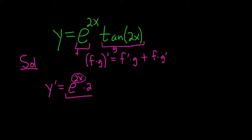So all of this is the derivative of the first, e to the 2x times the derivative of the inside, times the second plus the first times the derivative of the second. The derivative of tangent is secant squared. So we have secant squared of 2x, and then chain rule again. The derivative of the inside is 2.